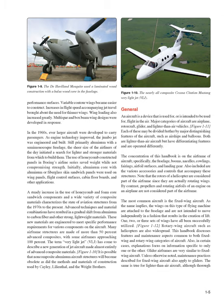Advanced techniques and material combinations have resulted in a gradual shift from aluminum to carbon fiber and other strong, lightweight materials. These new materials are engineered to meet specific performance requirements for various components on the aircraft. Many airframe structures are made of more than 50% advanced composites, with some airframes approaching 100%. The term very light jet (VLJ) has come to describe a new generation of jet aircraft made almost entirely of advanced composite materials. It is possible that non-composite aluminum aircraft structures will become obsolete, as did the methods and materials of construction used by Cayley, Lilienthal, and the Wright brothers.